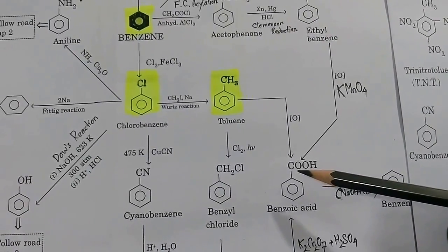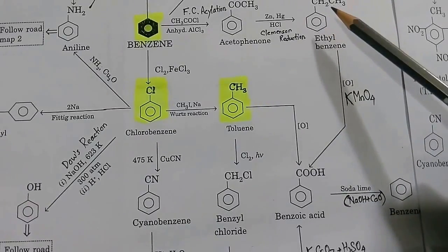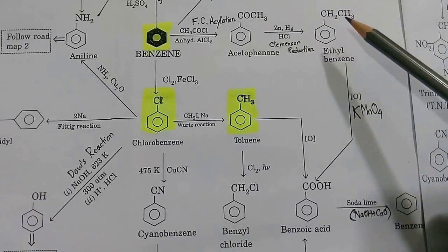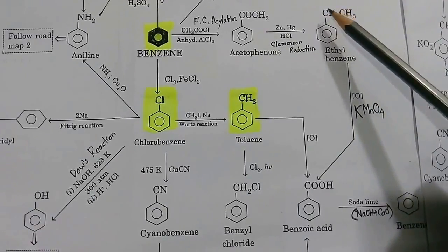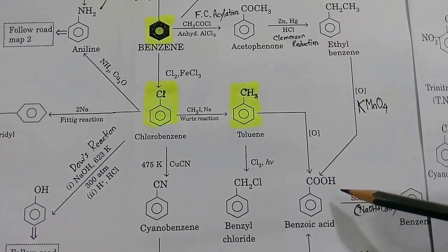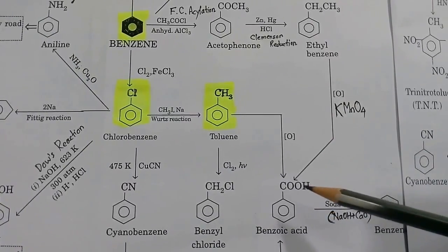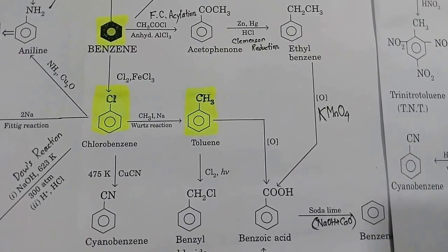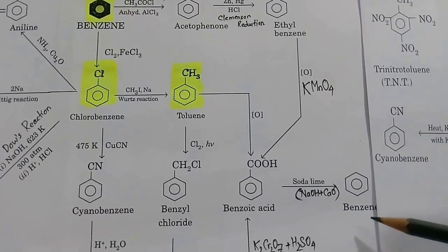Benzoic acid can also be obtained from ethyl benzene, which was prepared from acetophenone by Clemmensen reduction. All carbon side groups — methyl, ethyl, isopropyl, acetyl — whenever oxidized by KMnO4 give the same product, benzoic acid. If you want to remove the COOH group from benzoic acid to get benzene, the best reagent is soda lime, which is a mixture of NaOH and CaO.